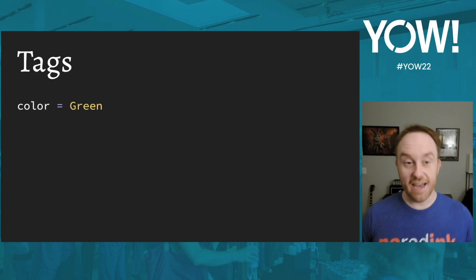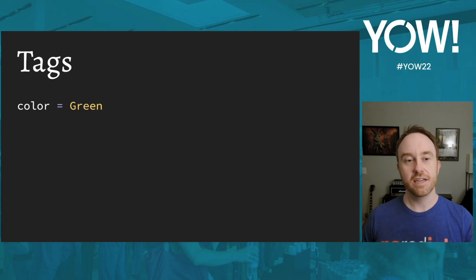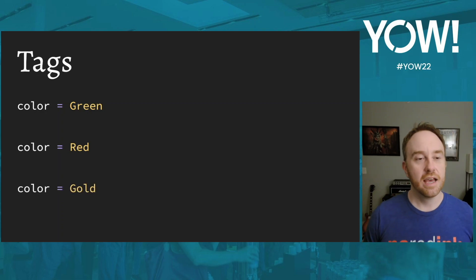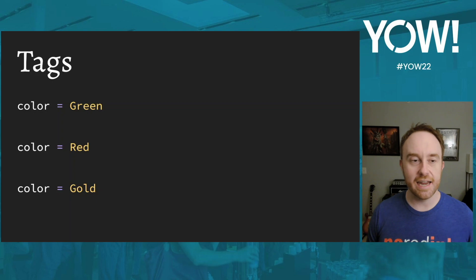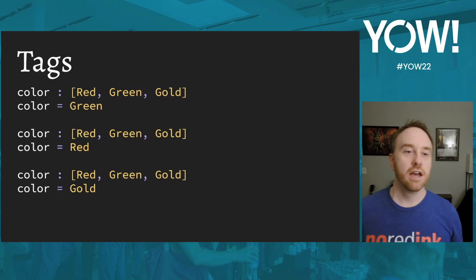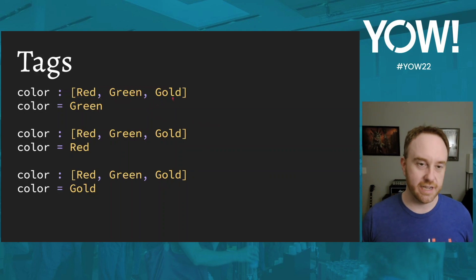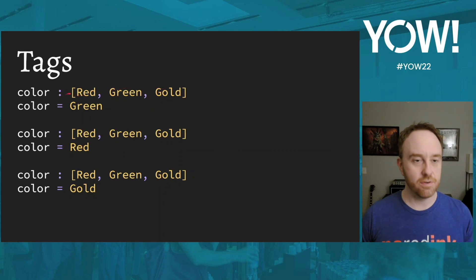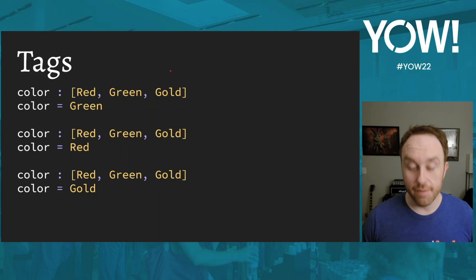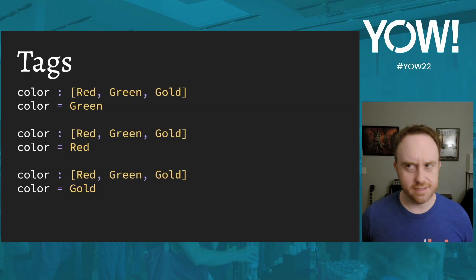ROC is a purely functional language that compiles to machine code or WebAssembly, with heavy emphasis on both runtime and compile-time performance. The type system includes tag unions. Here are some examples: I can write 'color = Green' — because Green is capitalized, it's a tag. I can also have Red or Gold. I can optionally add a type annotation saying color is the tag union [Red, Green, Gold]. ROC has 100% type inference, so annotations are never required but can document intent.